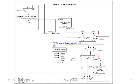Now let us see the purpose of each module in this architecture. The program counter points to the next instruction in the instruction memory. We have separate instruction memory and data memory, meaning the architecture follows the Harvard architecture. The program counter is incremented by four because this instruction memory holds only one byte per location, and since the instruction length is 32 bits, we need four locations to store one instruction.